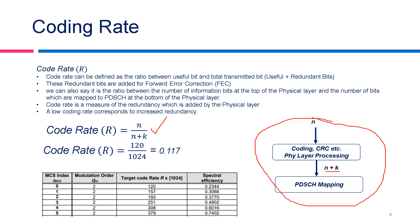Here we can also see a calculation for the code rate using a table from 3GPP. This table is basically the MCS table from the physical layer spec. Taking the very first row, we can see 120 — this 120 represents the actual useful bits — whereas the total bits transmitted for this modulation is 1024. The code rate for this comes out as 0.117.